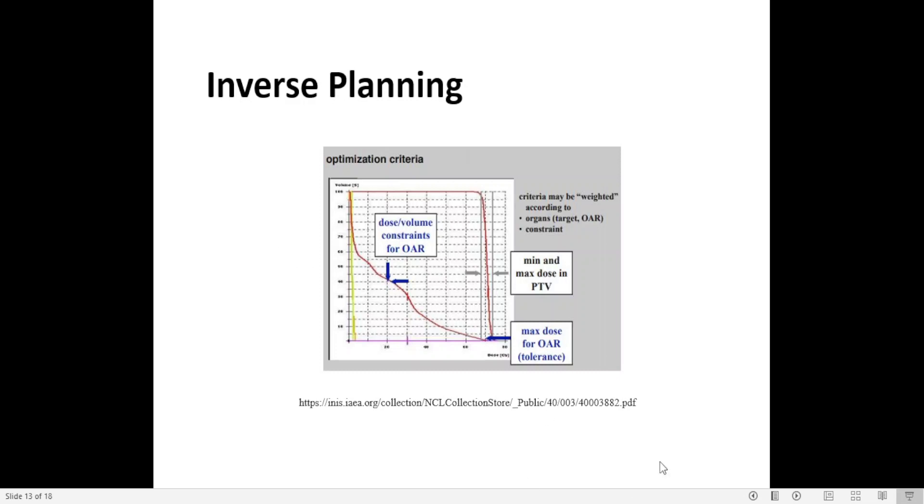Here is just for us to visualize better what I just said, so optimization criteria. We have for organs at risk, we have dose volume constraints or max dose, especially for serial structures, like in the spinal cord, we have a max dose there. If the target is close to it, we have to try to bring the dose down at that serial structure. Mean and max dose for targets is another optimization criterion.